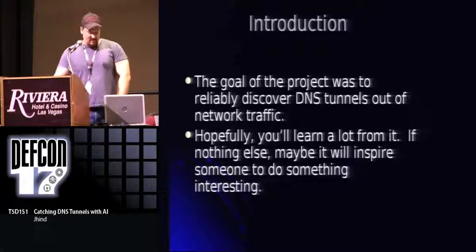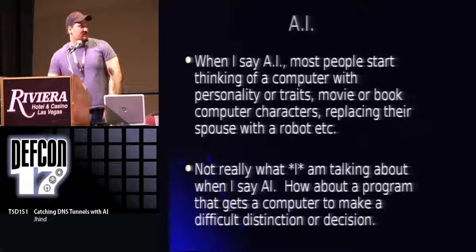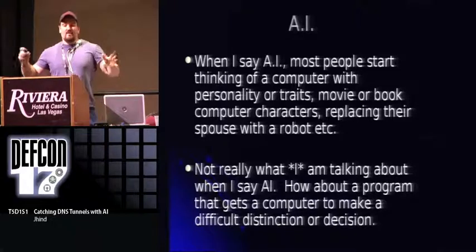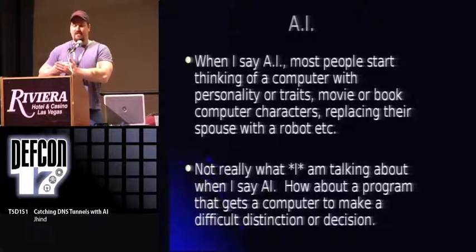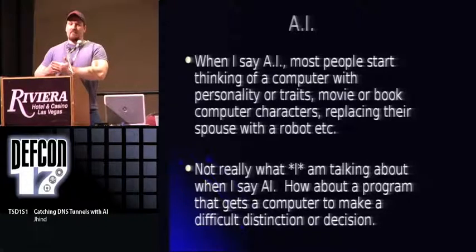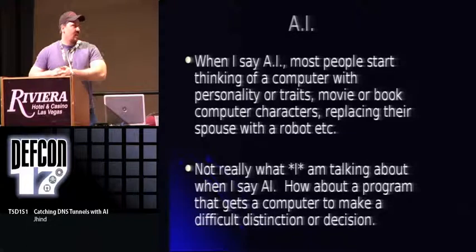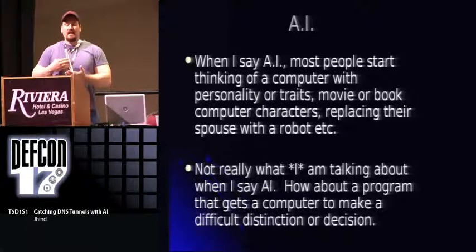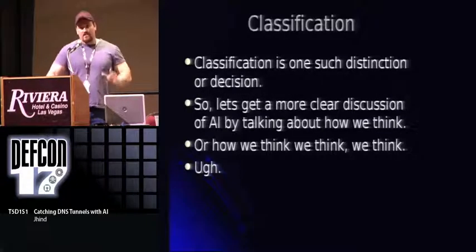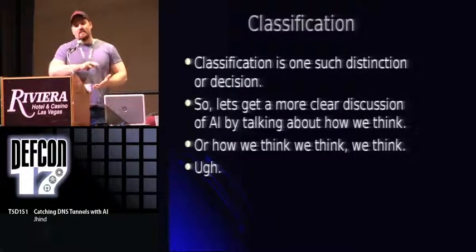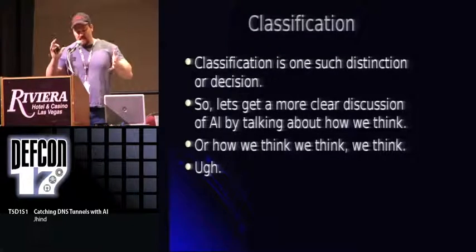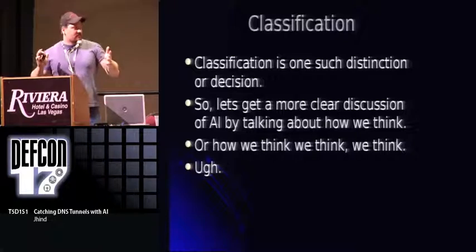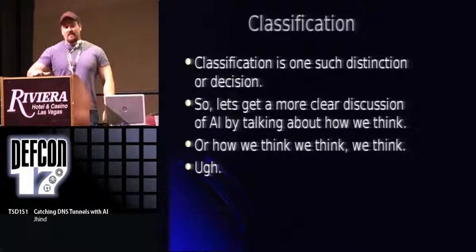This is the story of that project. When I'm talking about AI, I'm not talking about anything fantastic. I'm talking about real AI, like what you see in video games, what you see in spam filters. Spam filters are an amazing application of AI — they work tremendously well. That's the kind of AI I'm talking about: getting a machine to make a sophisticated decision. The decision we're going to try to make to pick out a DNS tunnel is classification.